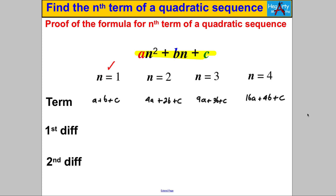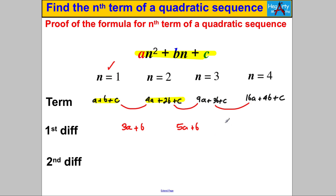The first difference is what I get if I take the second term and subtract the first term. So: 4a − a = 3a, 2b − b = +b, and c − c eliminates the c, giving 3a + b. The next first difference: 9a − 4a = 5a, 3b − 2b = b, giving 5a + b. And the next: 16a − 9a = 7a, 4b − 3b = b, giving 7a + b.